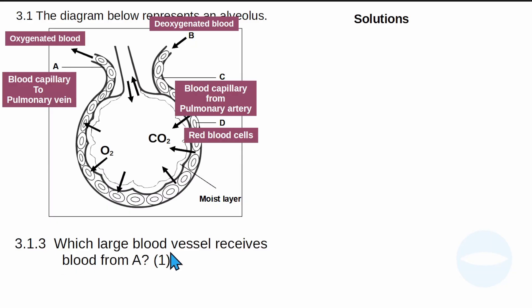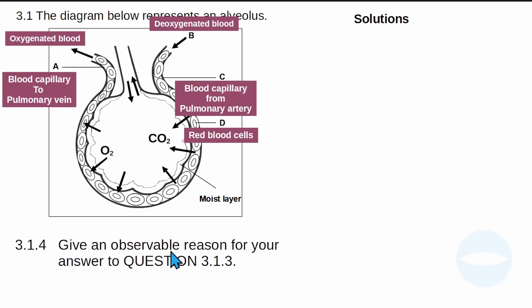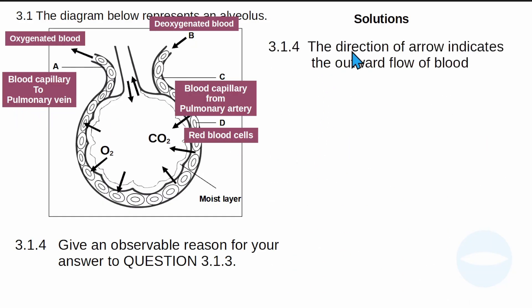Question 3.1.3: Which large blood vessel receives blood from A? The blood vessel that receives blood from A is the pulmonary vein. The pulmonary vein takes blood from the lungs to the heart. Question 3.1.4: Give an observation and reason for your answer to 3.1.3. The direction of the arrow on vessel A indicates the outward flow of blood from the lungs.